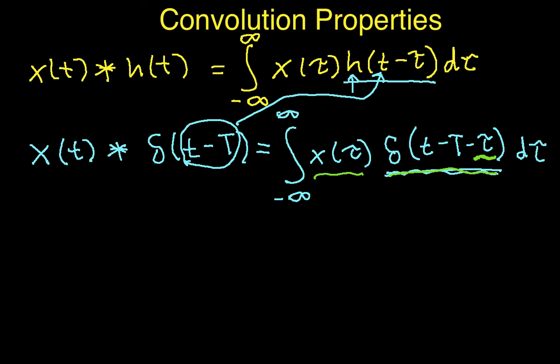But because that is only the case when tau is equal to t minus cap T, then the whole integral becomes x of t minus cap T.